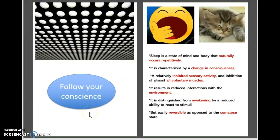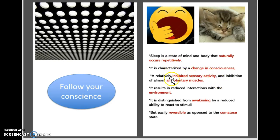So what is sleep? Sleep is a state of mind and body that naturally occurs repetitively. It is characterized by a change in consciousness, a relatively inhibited sensory activity, and inhibition of almost all voluntary muscles. It results in reduced interactions with your mind and with the environment.